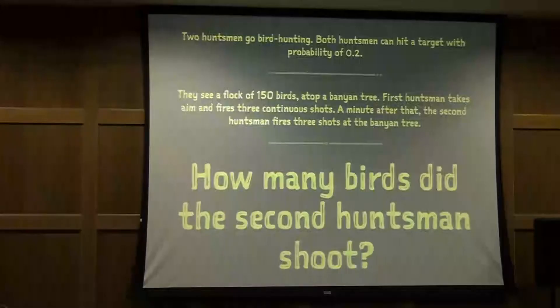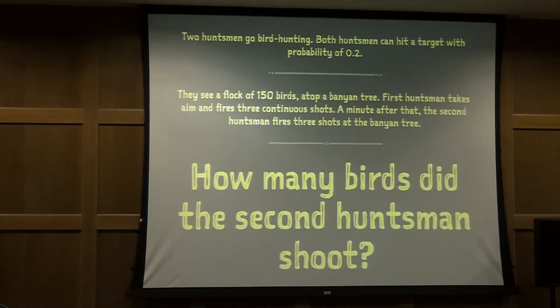We have two huntsmen who go for bird hunting. They both are equally bad — they can hit only 20% of the time. They see 150 birds atop a tree. The first guy hits three shots, and then after that the second guy hits. Can you compute how many birds the second guy hit?